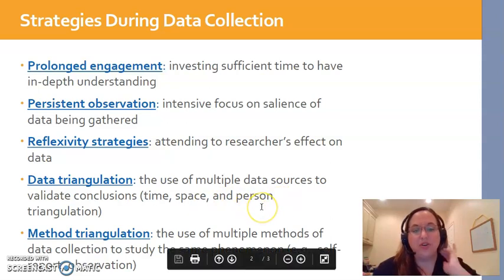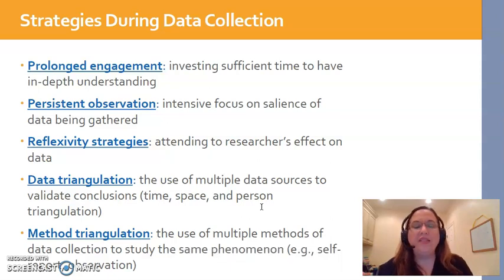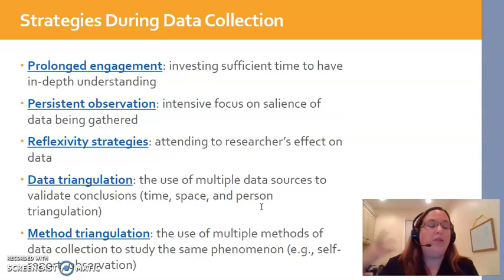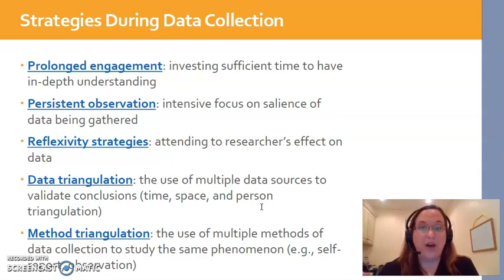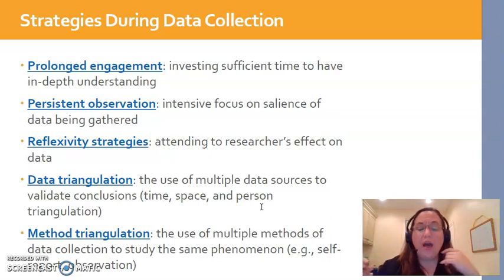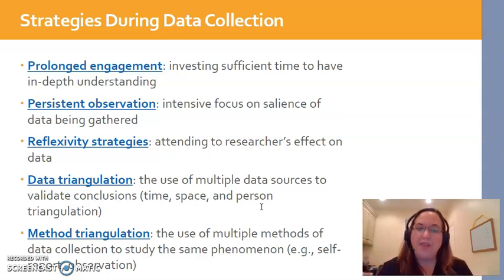Person triangulation does not simply mean going to more than one person — you're going to do that anyway unless you're doing a case study of just one person. It means talking to different types of people. For example, if we're studying nursing burnout, we'd talk to nurses, but we might also include new graduate nurses, preceptors, educators, managers, and maybe hospital administrators — different levels and types of people — to get a bigger picture view of the phenomenon of interest. If all of them boil down to the same thing, that enhances the credibility of the data collection.